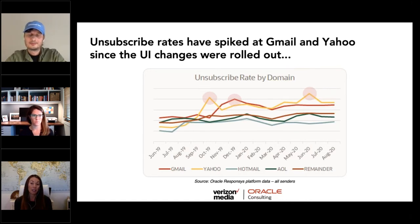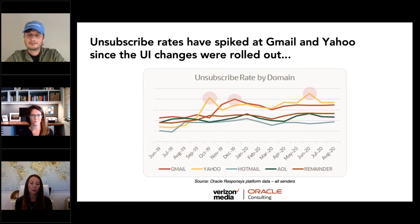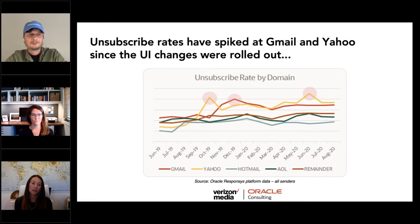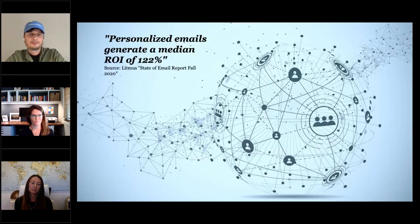We've seen notable upticks in unsubscribe rates for Gmail and Verizon Media following the rollout of Yahoo's subscription view and the increased frequency of unsubscribe prompts from Gmail. Unsubscribe rates for all ISPs are also significantly higher year over year. When COVID shutdowns hit around March, there was a brief dip in unsubscribe rates, but all domains have been trending higher since. Digital is getting more attention, so more people are in their email, potentially cleaning out their inboxes via unsubscribe.